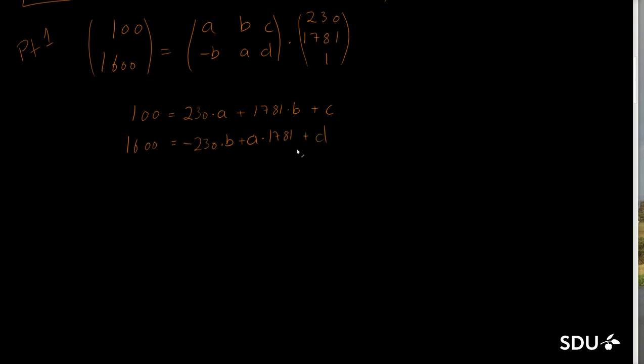This can be rearranged a bit. We would like to have all the contributions of a in the first column, then b and then c and d. This can also be written in an extended matrix form where we have the first element of the matrix will be 230, then 1781, 1 and 0, and finally we have this value of 100. Similar for the second equation, we have the coefficients to a, b, c which is zero, and d, with the value of 1600.